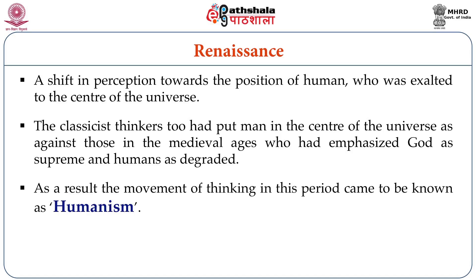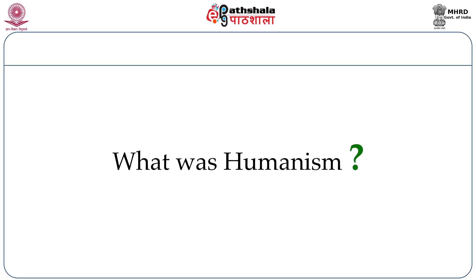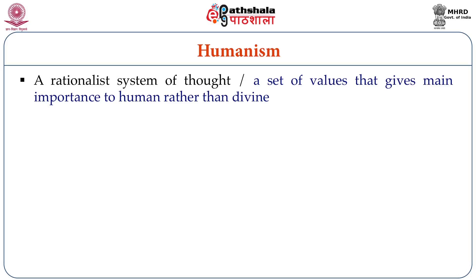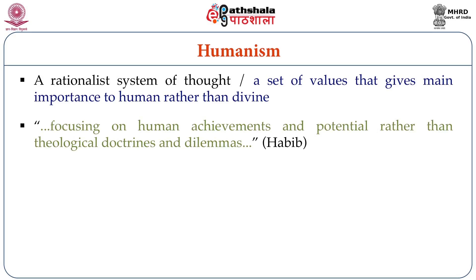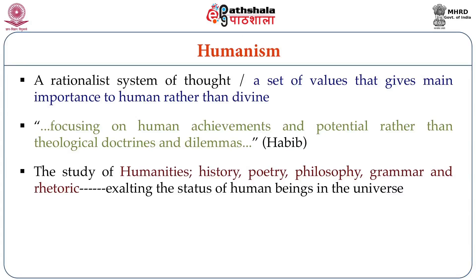Because in the medieval ages, the priests emphasized God as supreme and humans as degraded. As a result, there was a cultural movement during the Renaissance, and this came to be known as humanism. Humanism was a rationalist system of thought, a set of values that gave main importance to human beings rather than the divine. The focus was on human achievements and human potential, rather than theological doctrines and dilemmas. What became important during this period was the study of humanities — history, poetry, philosophy, grammar and rhetoric — all of which exalted the status of human beings in the universe.